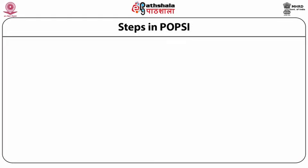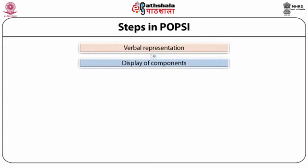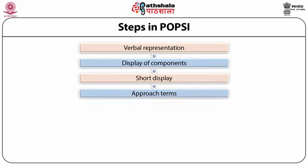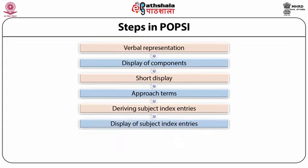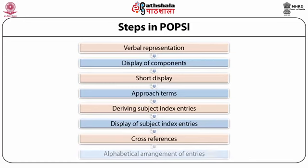Steps in POPSI. The following steps are involved in POPSI: first, verbal representation; second, display of components; third, short display; fourth, approach terms; fifth, deriving subject index entry; sixth, display of subject index entries; seventh, cross references; and eighth, alphabetical arrangement of entries.